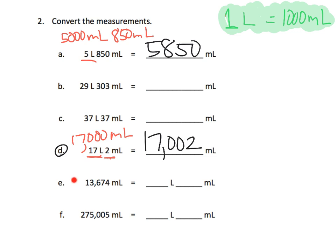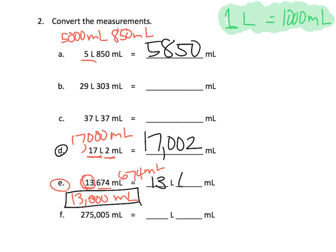And then problem E. Problem E is basically the same, only in reverse. We've got this big group of milliliters, and we have to separate them into liters and milliliters. The idea is, we see that it says 13,000 — remember, each thousand is a liter — so 13,000 milliliters plus we have the 674 milliliters. That translates to 13 liters, and we have the extra 647 milliliters left over.